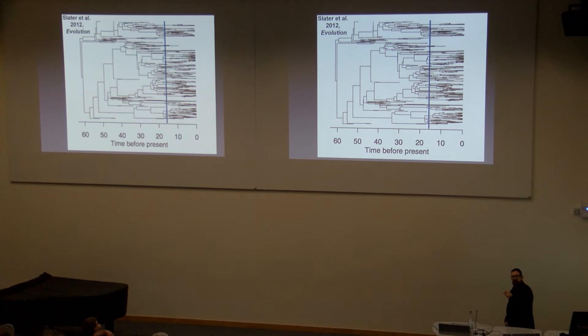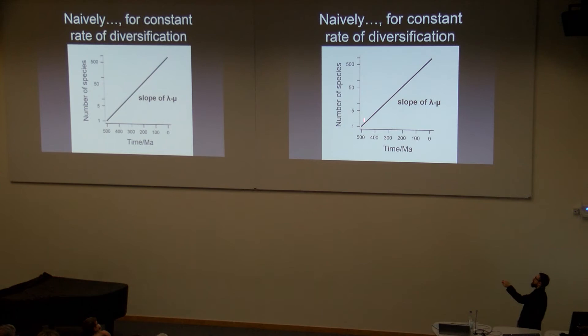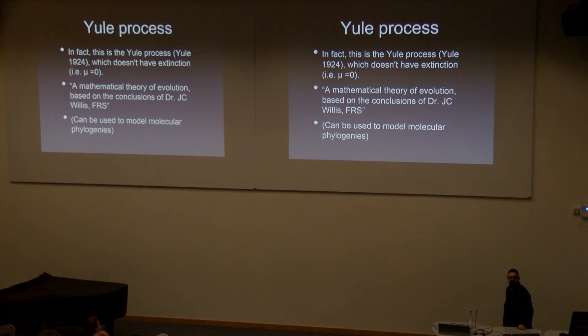Now kind of naively, when you go into this field, you might think that when you look at the rate of diversification through time, it's going to look like a steady accumulation on a log scale - starting off say 500 million years ago, the slope of lambda minus mu, a steady increase. But in fact, this isn't the case. This is what the Yule process gives - which Julia also mentioned very briefly. The Yule process is a way of modelling birth-death processes when you don't have any extinction, and this is what happens in molecular phylogenies, because obviously nothing can go extinct in a molecular phylogeny since all branches lead to living things.